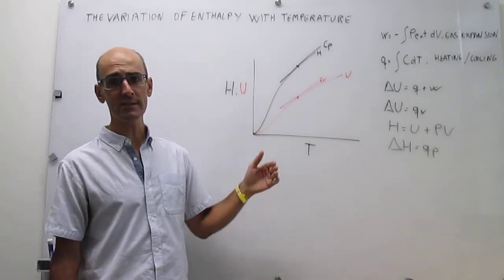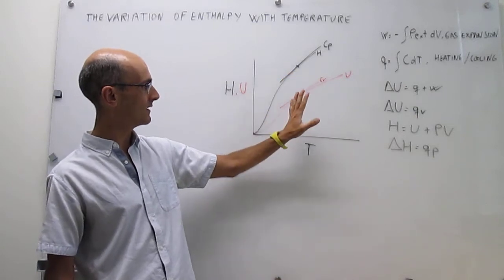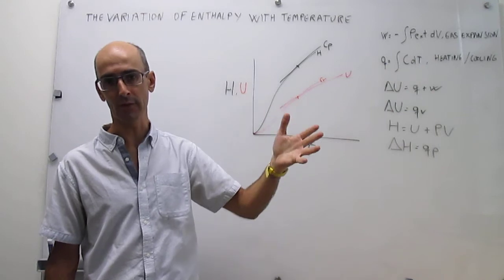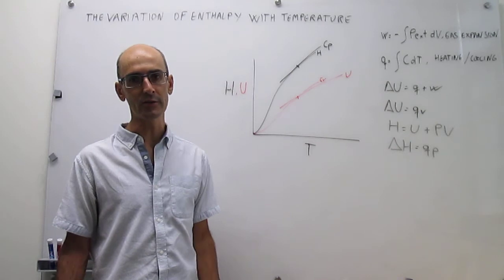But the variation is slightly different, and it turns out that the slopes of these curves at any point are either the heat capacity at constant pressure for the enthalpy and then the heat capacity at constant volume for the internal energy.